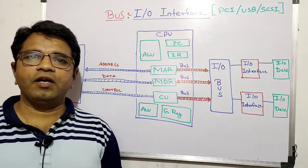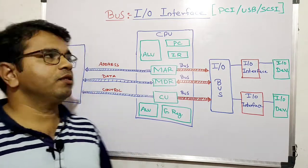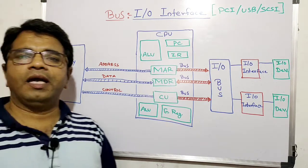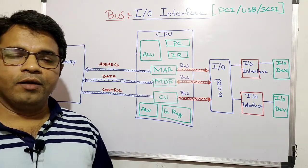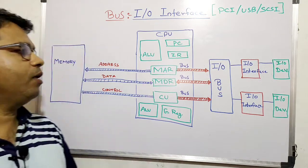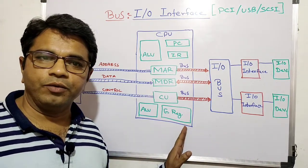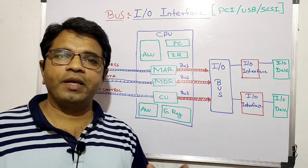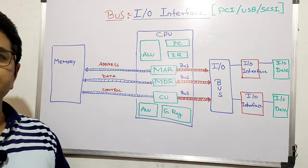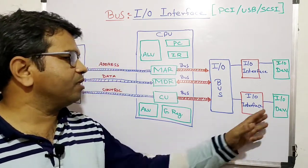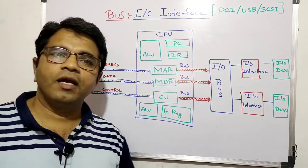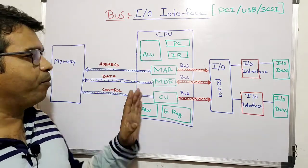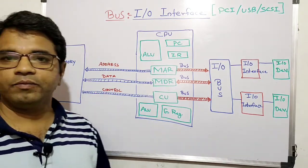Today we are going to cover the topic of I/O interface buses — USB, SCSI, and PCI buses. We cannot connect I/O devices directly to the CPU, and we have understood this in the last classes. There are many reasons — electrical, mechanical — the devices have a different nature and the CPU has a different nature. Today we are going to focus on the buses which are there in the system.